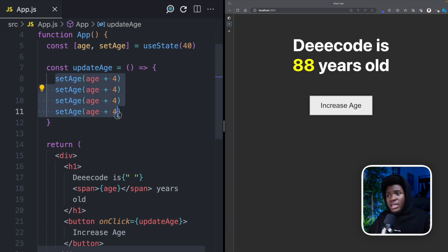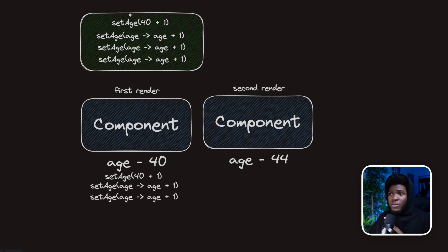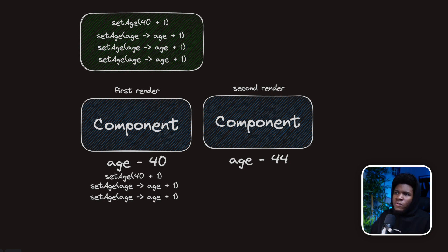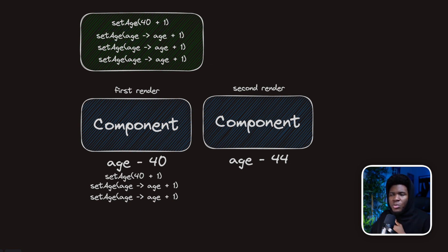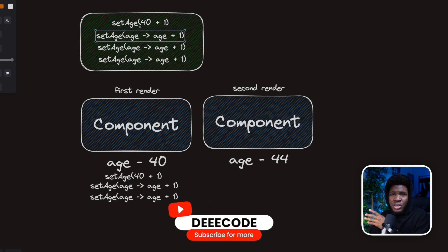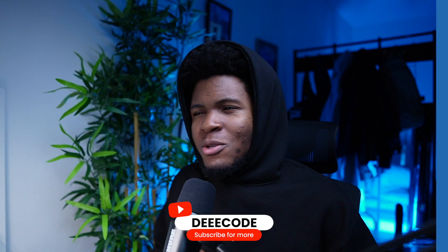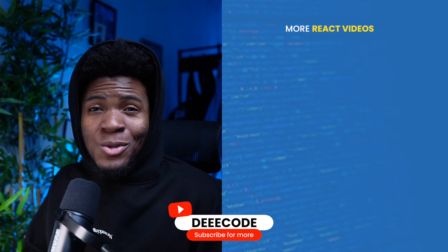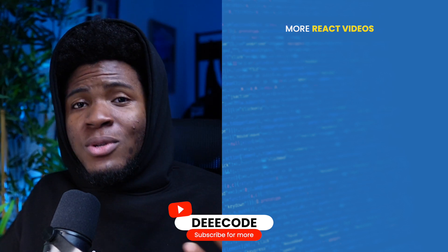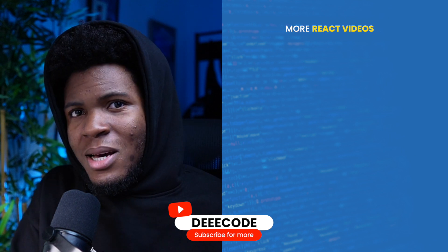You might also be thinking that if you call setAge four times, it's going to render your component four times. React actually batches all of these state updates and runs them just once. So instead of rendering after each setAge call, React goes through the entire queue first. At the end, it determines what the age state will be for the second render. By going through this batching and order of execution, your component is only rendered one time, not four. I hope this gives you a better understanding of the useState hook and why developers use callback functions in their useState calls.